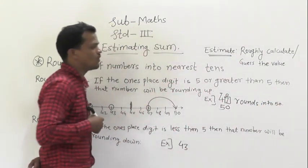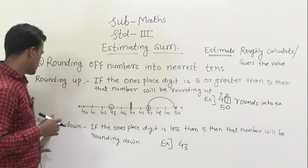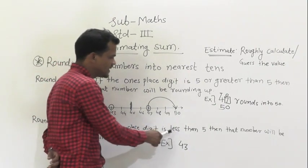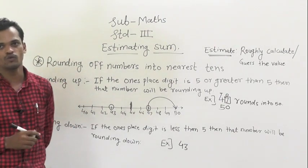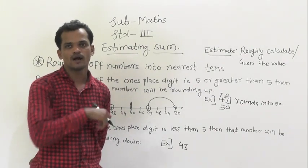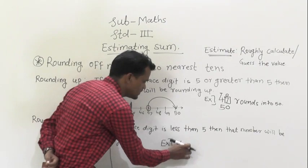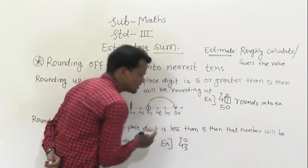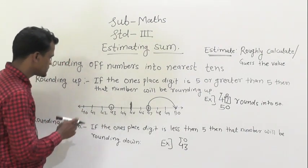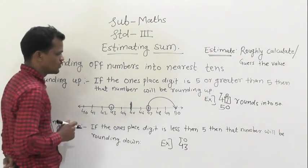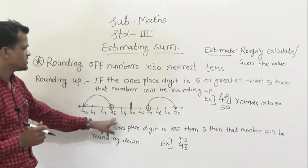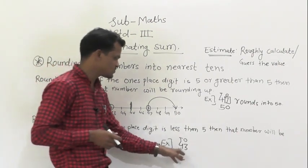Now, what does rounding down mean? If the one's place digit is less than 5, then that number will be rounded down. For example, take 43 — the one's place digit is 3. On the number line, 43 falls between 40 and 45, and 43 is nearest to 40.